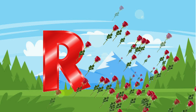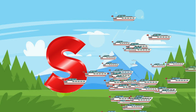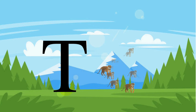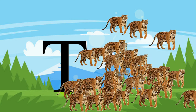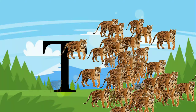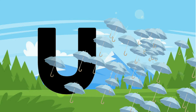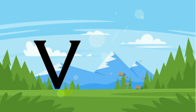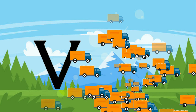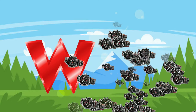R for rose, R for rose. S for sheep, S for sheep. T for tiger, T for tiger. U for umbrella, U for umbrella. V for van. W for flower, W for bird.